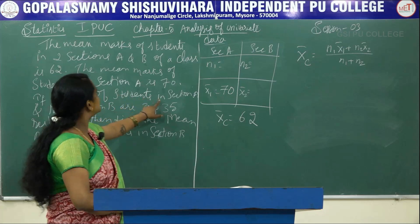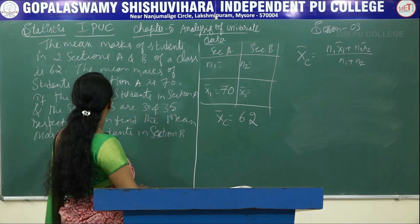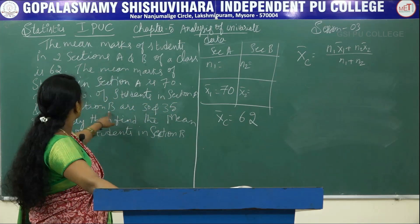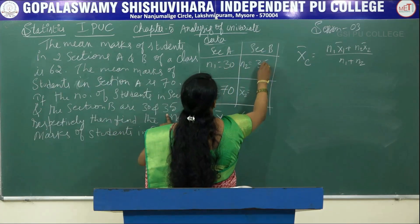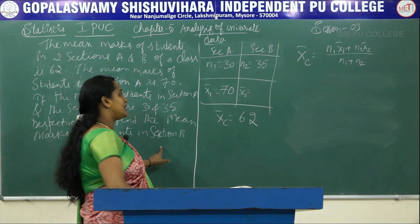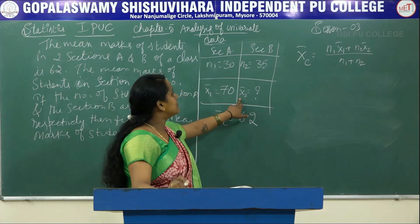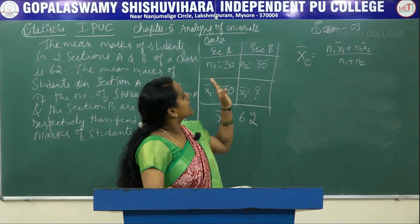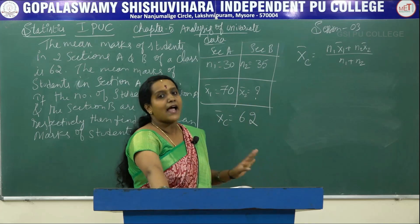The number of students in section A is n1 = 30, and in section B is n2 = 35. We have to calculate the mean marks of section B, that is x̄₂. Since the combined arithmetic mean is already given, we substitute the known values into the same formula and simplify.